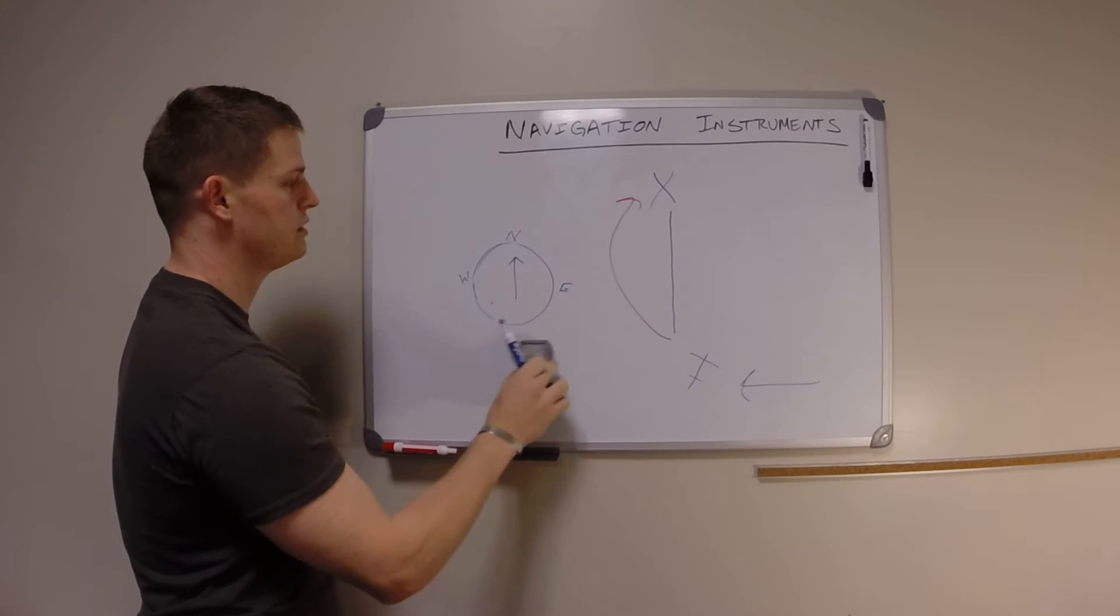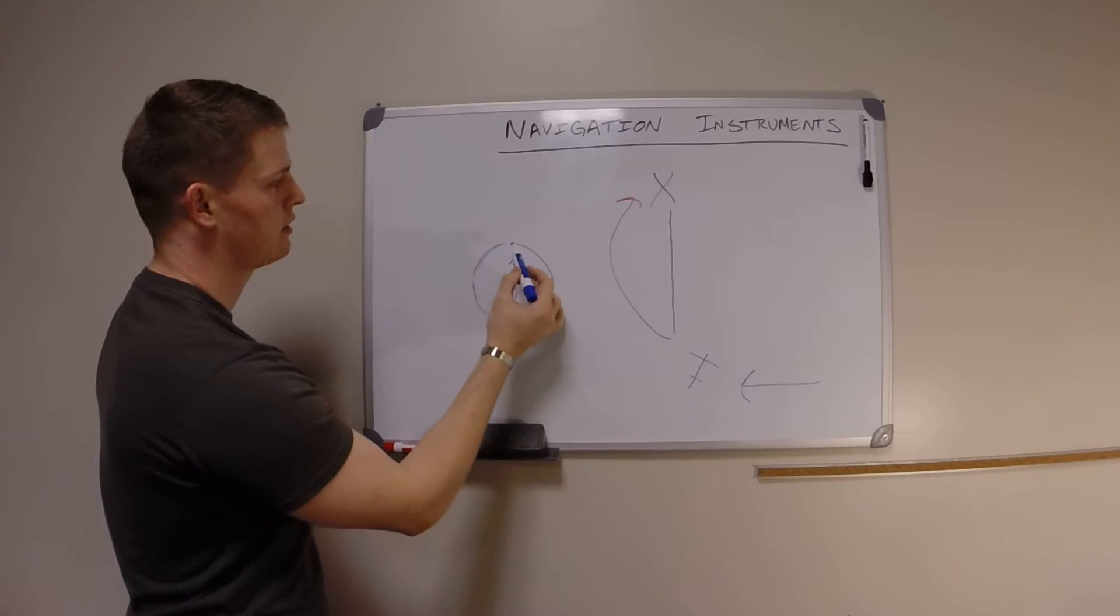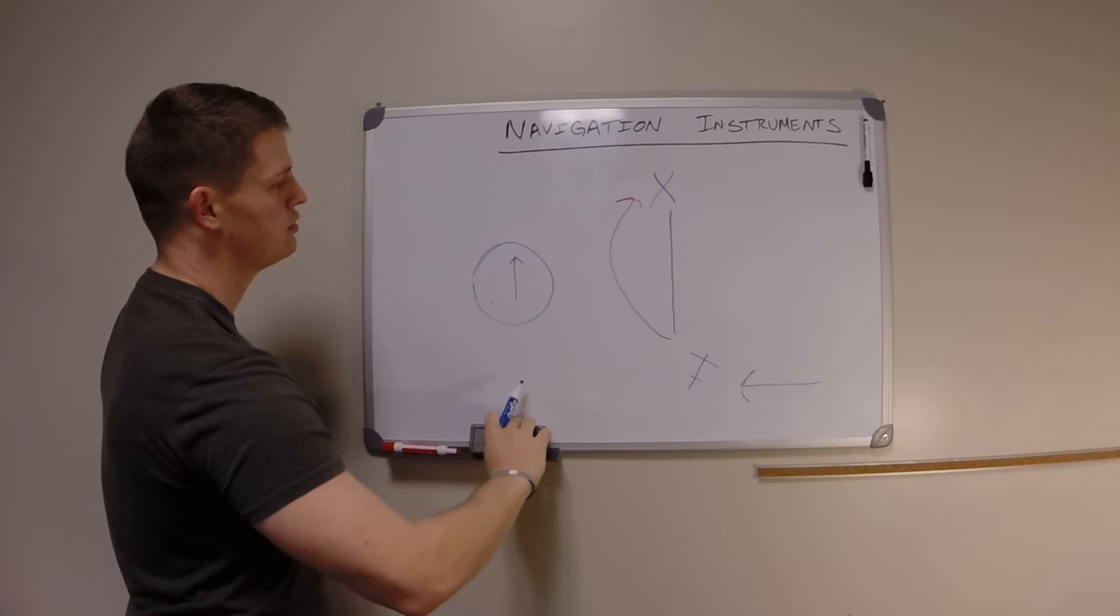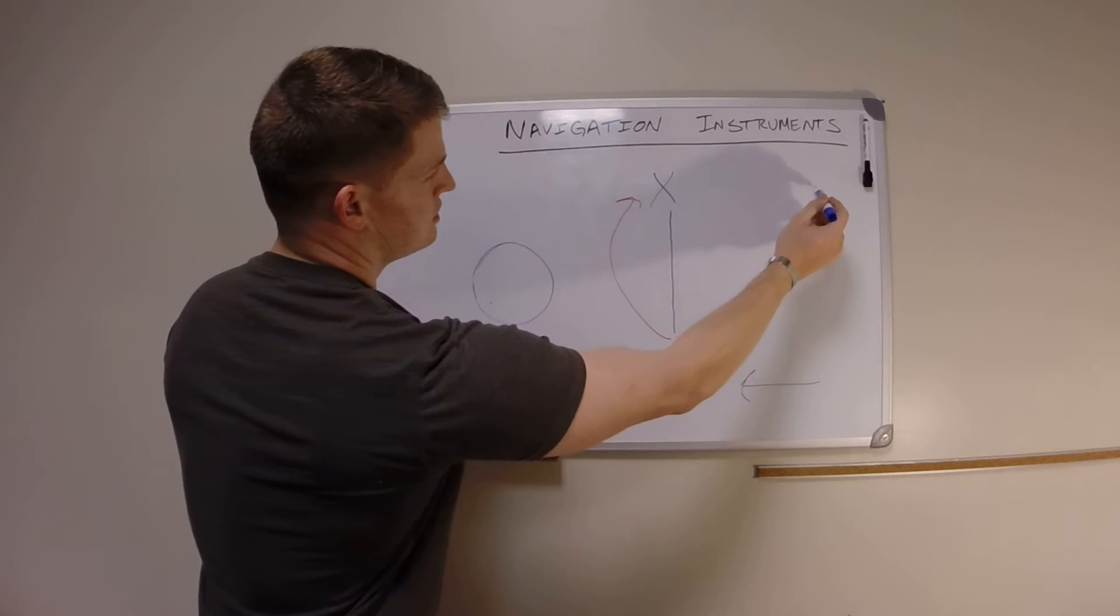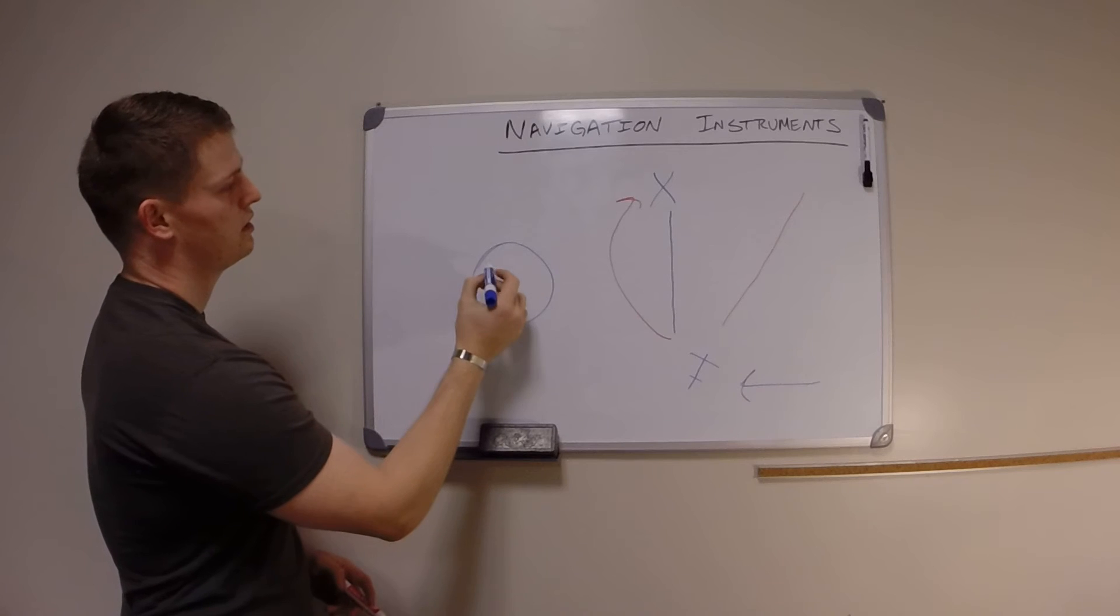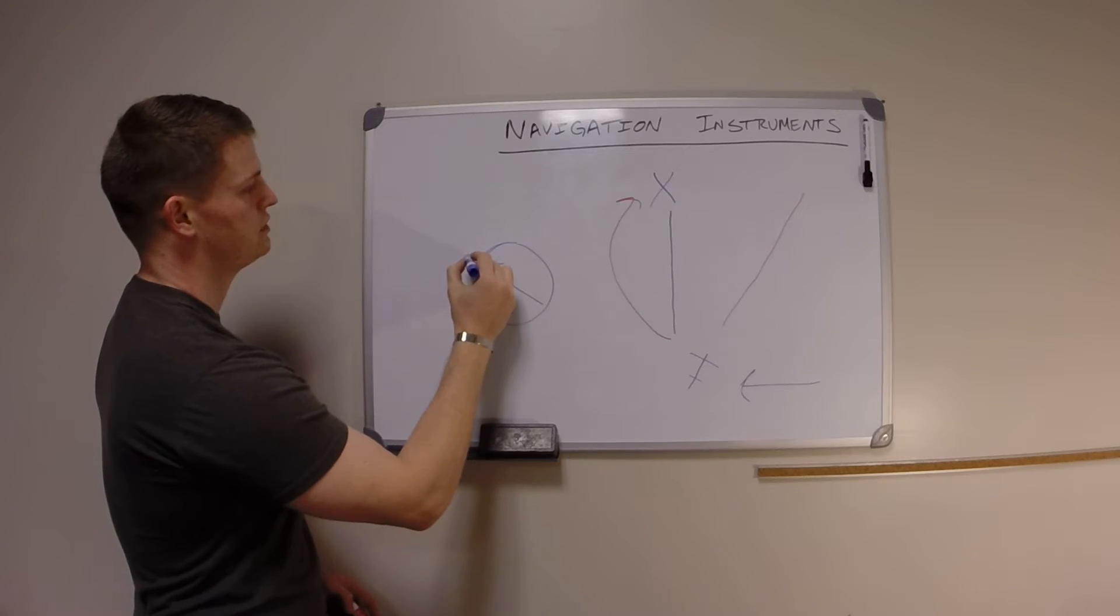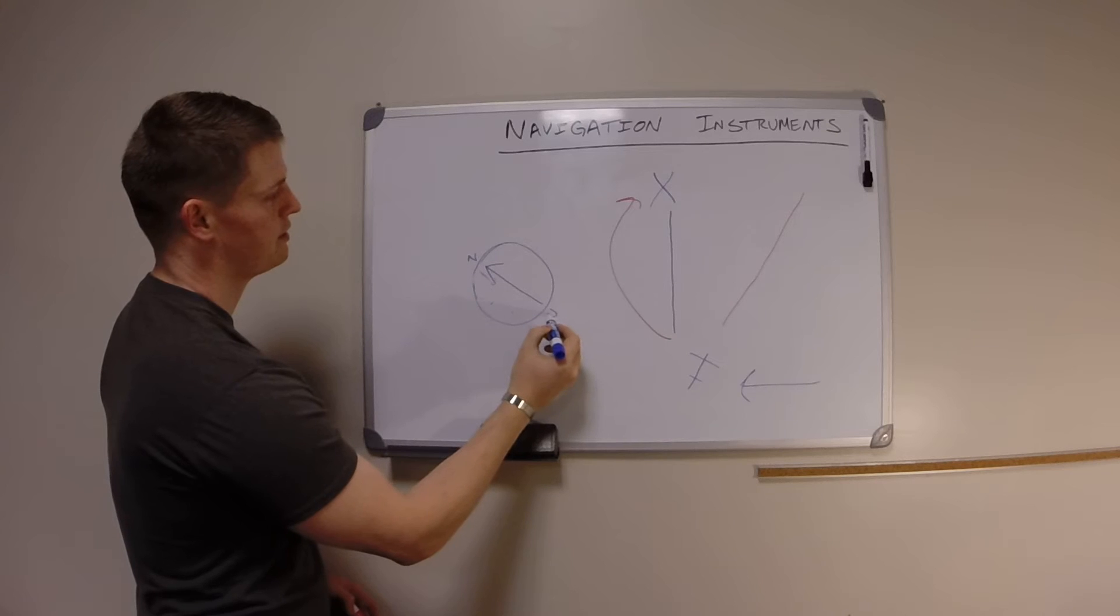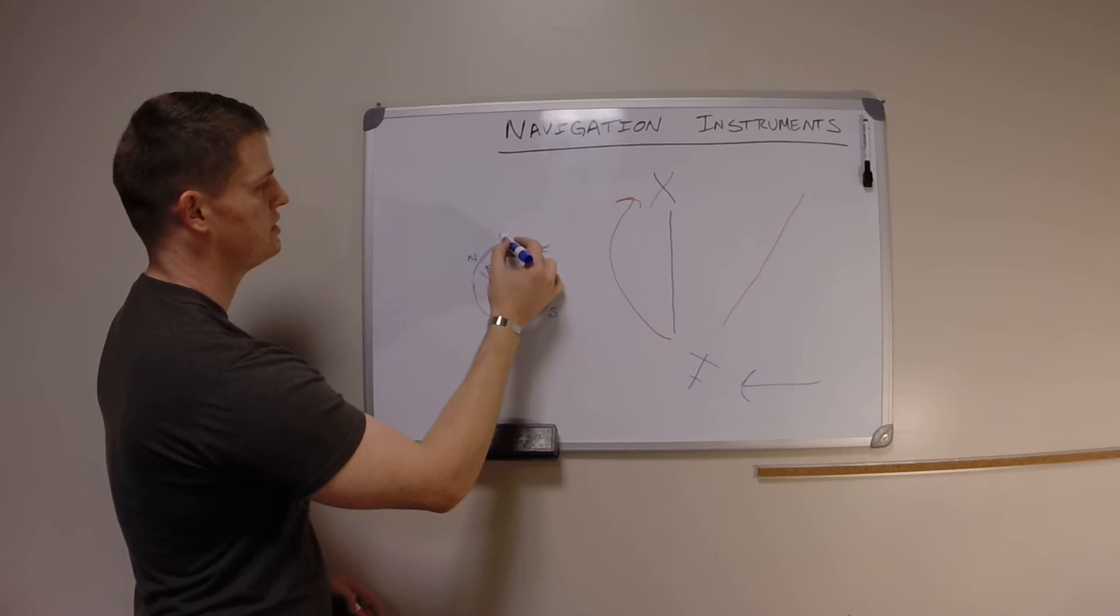So basically what your ADF is going to look like: your bearing pointer will still be pointing to the station, but the station will no longer be directly in front of you. This is where you're looking, and so it would actually be pointed like this. North would still be up here, south here. In this case, you might be on a zero four five heading.